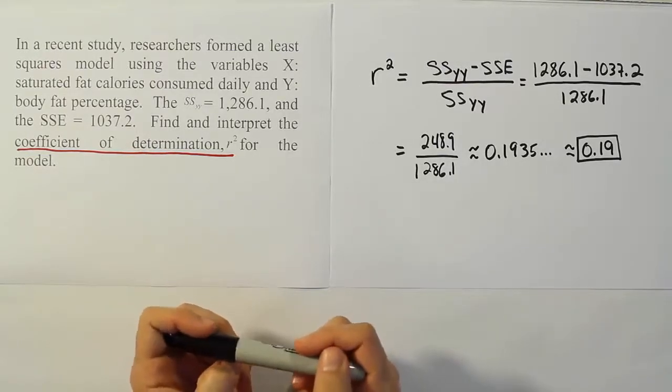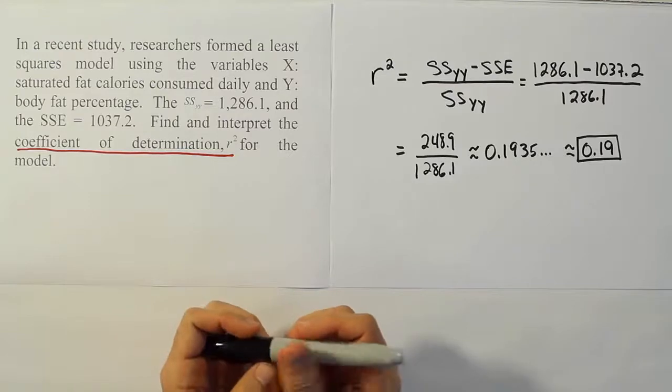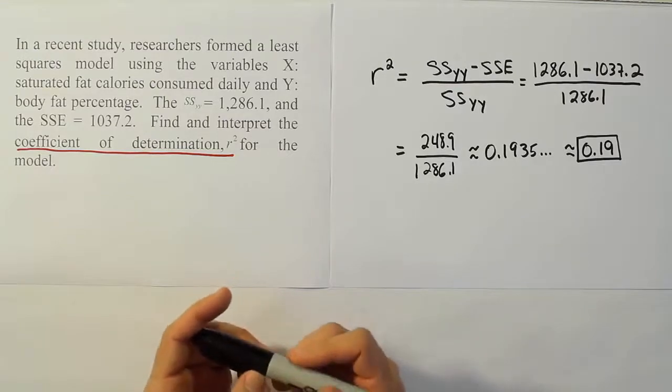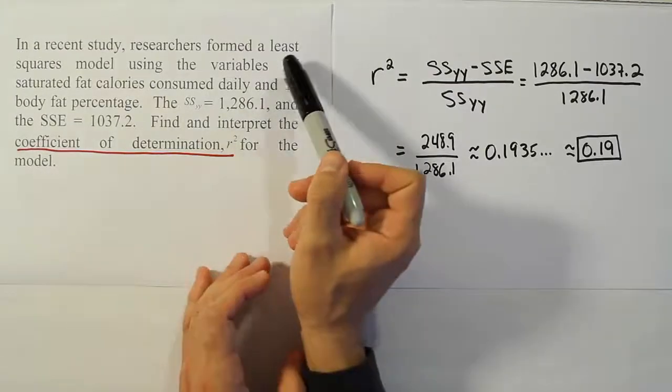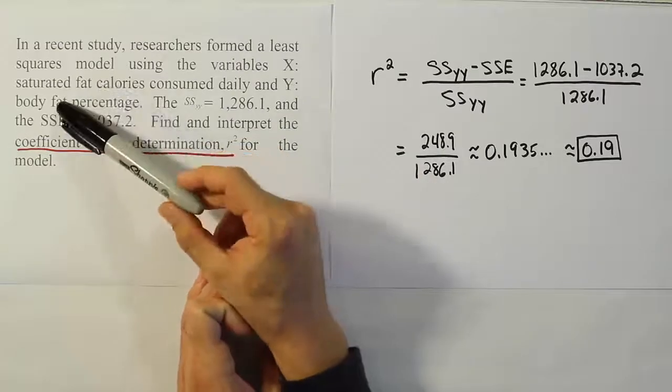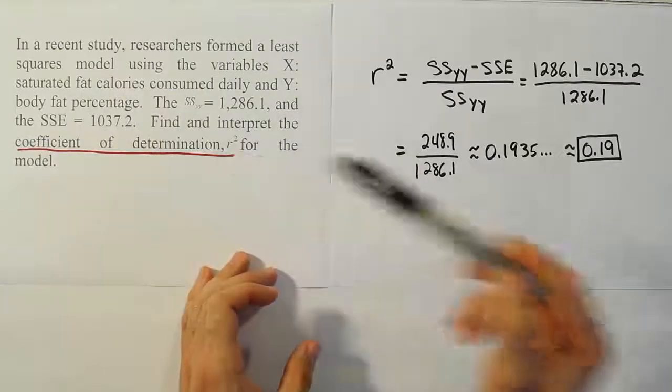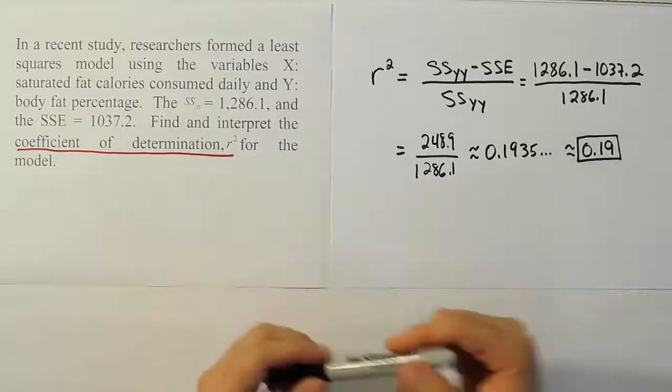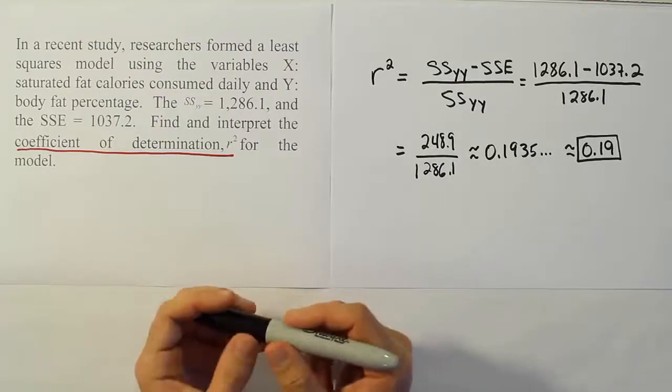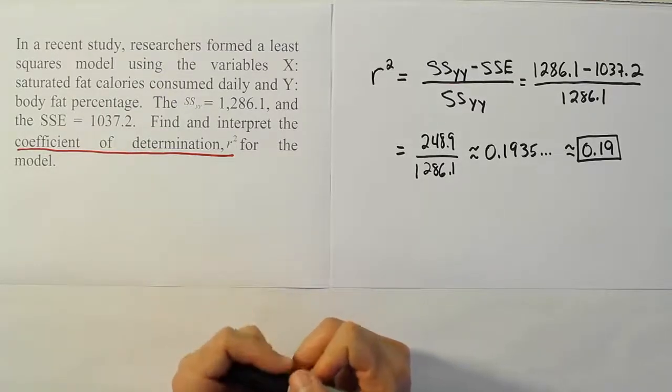So, essentially, X doesn't have a huge role in predicting body fat percentage in people. Of course, it's going to be difficult to figure out what causes the biggest difference in people's body fat percentage. But we can see here that X, the measure of saturated fat calories consumed daily, only explains about 19% of the variation you see between people's body fat percentages. And that's the interpretation of R squared.